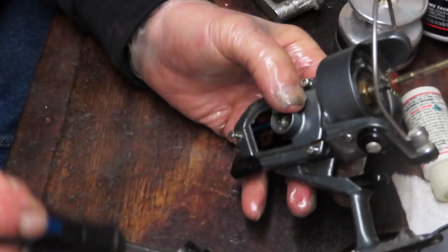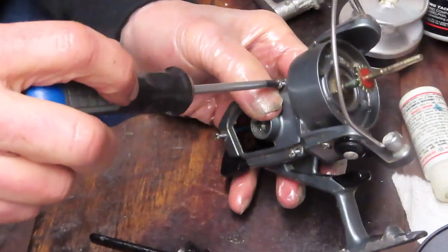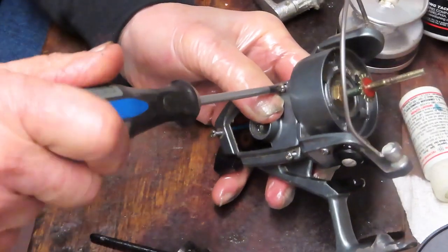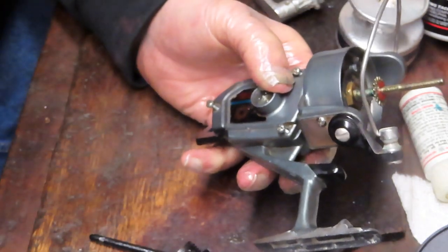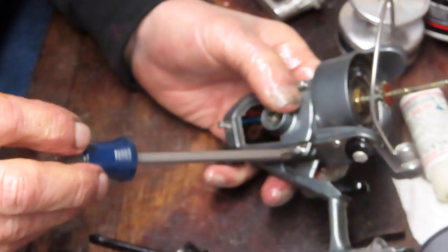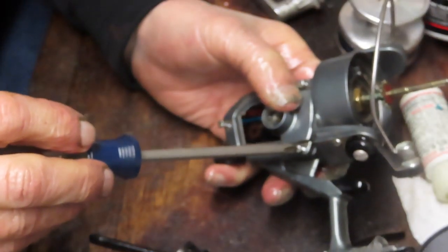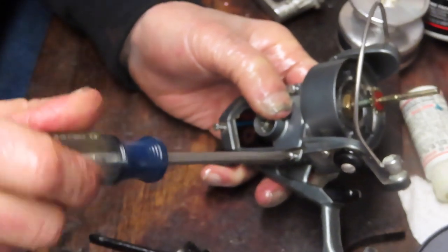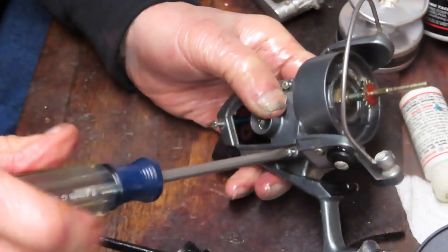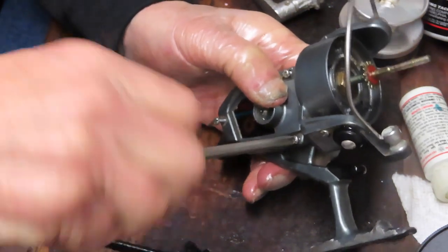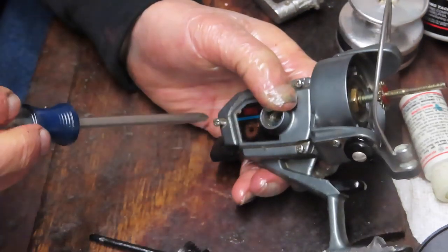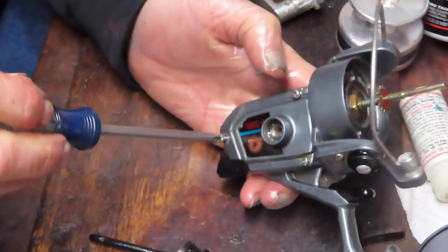Those are all the same size - they can go in any spot in this case. If there was one that you noticed was different, you could come back and make sure that the short one belonged in the hole that you noted, or the long one. Shimano does that a lot. Especially with the newer modern reels, the cases have a little bit of contour to them.